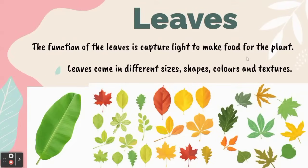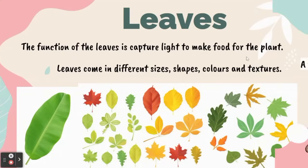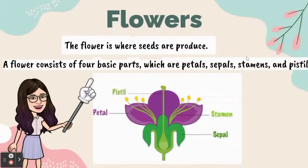The function of the leaf is to capture light to make food for the plant. Leaves come in different sizes, shapes, colors, and textures. Next, flowers — the flower is where seeds are produced. A flower consists of four basic parts.